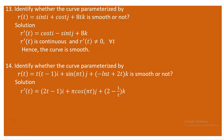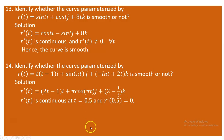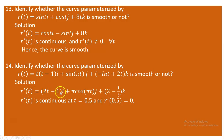Now think about when this derivative can be zero. The derivative is continuous at every number except zero. Let's try t = 0.5. If we substitute 0.5 into the first component: 2(0.5) − 1 = 1 − 1 = 0. For the second component: cos(π · 0.5) = cos(90°) = 0.